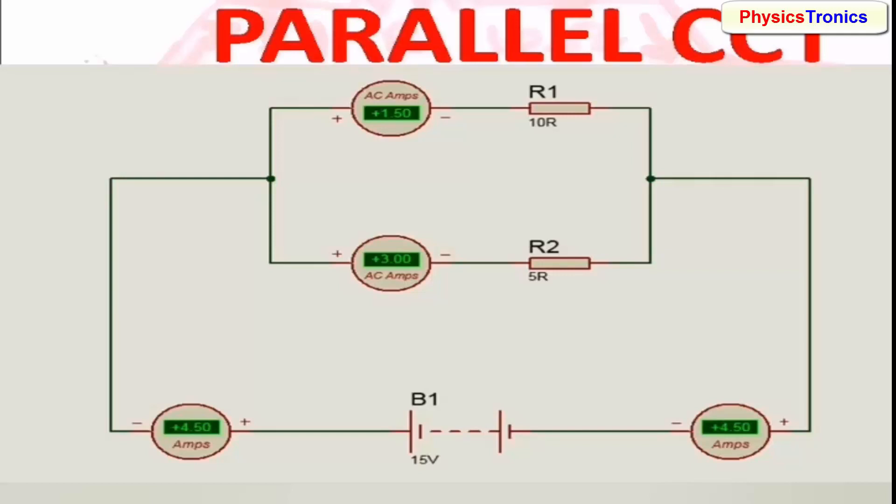You can see the leftmost downside ammeter gives 4.5 amperes and the rightmost also gives 4.5 amperes. These two ammeters calculate the source current going out and returning back.